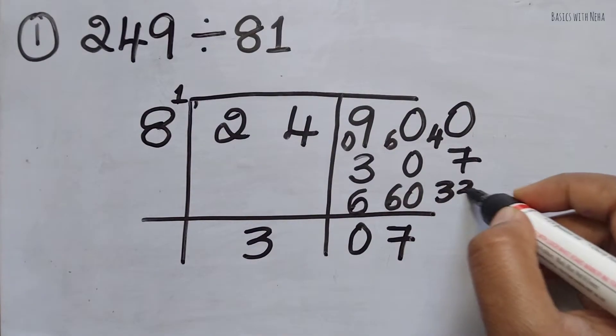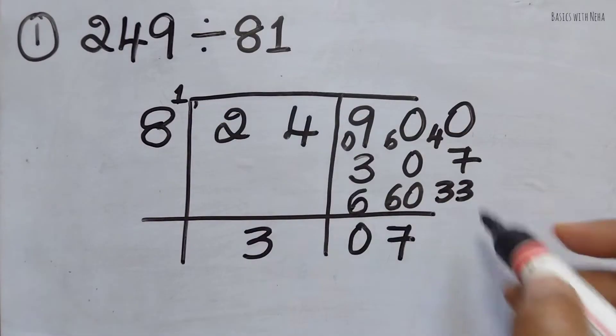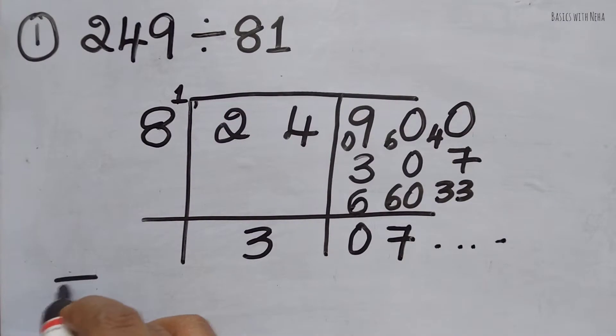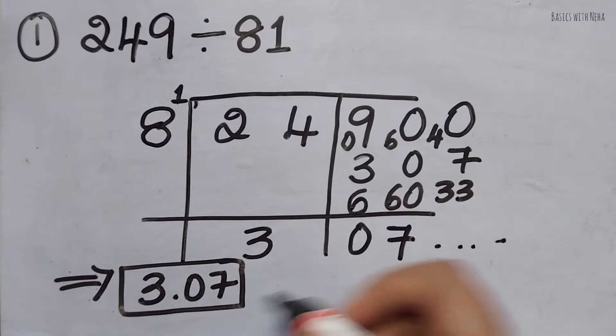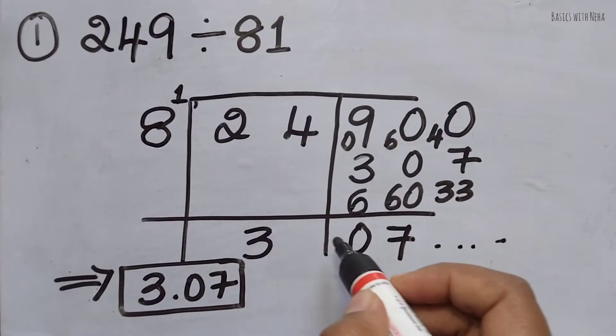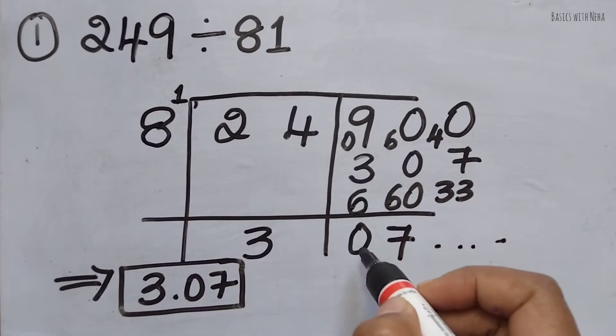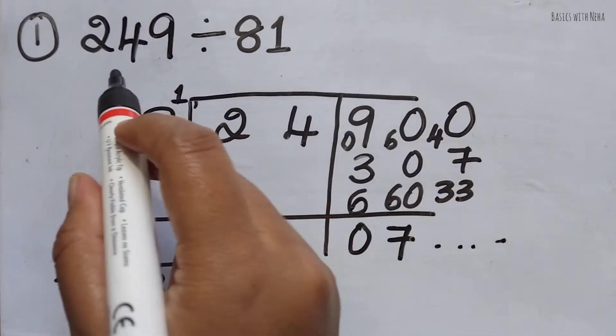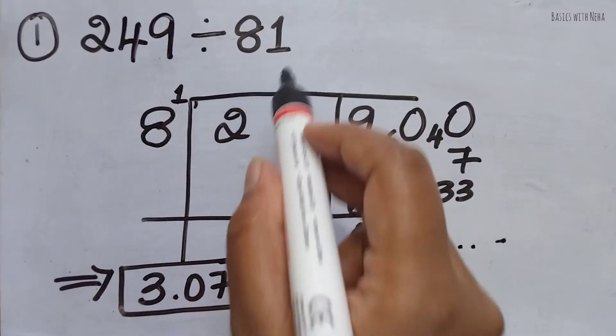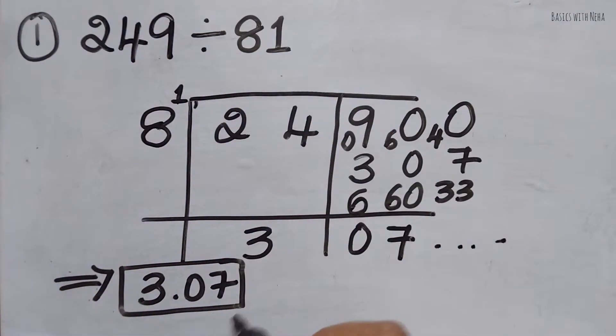Then I'm going to divide this again, so it'll go on. Now my answer is 3.07. How do we decide upon this decimal? Once the number - whatever number comes after this split - is the decimal place. So ideally my answer to this particular question, 249 divided by 81, is 3.07.